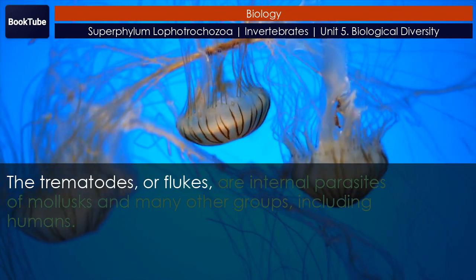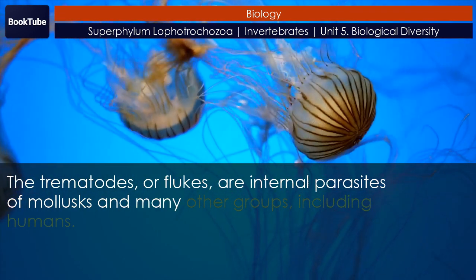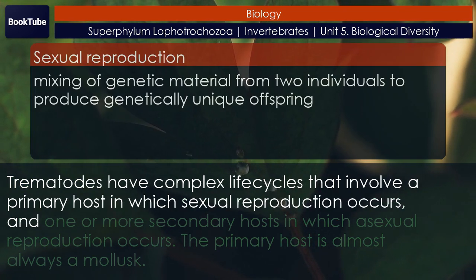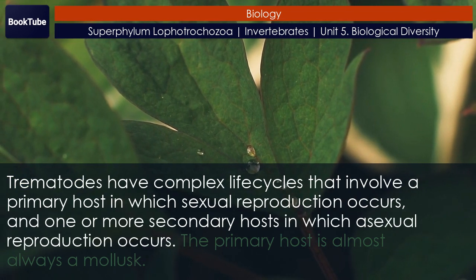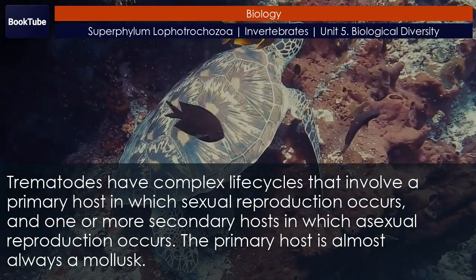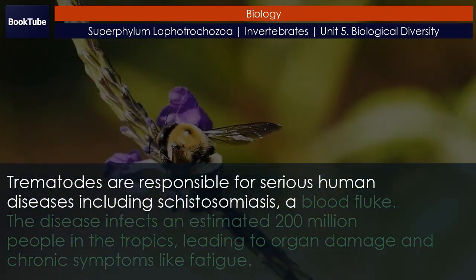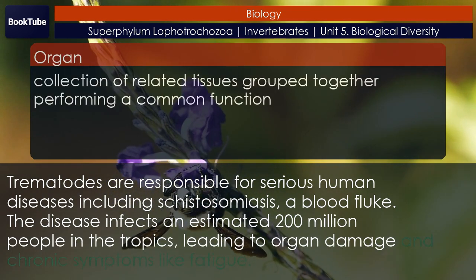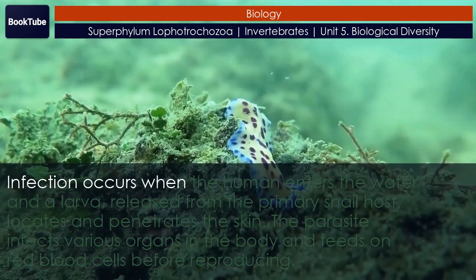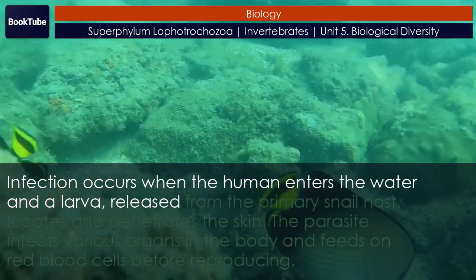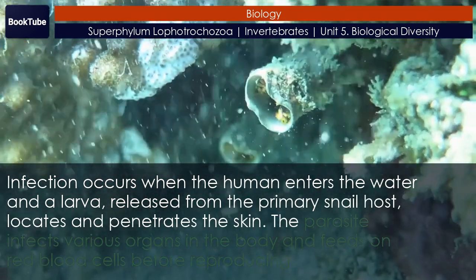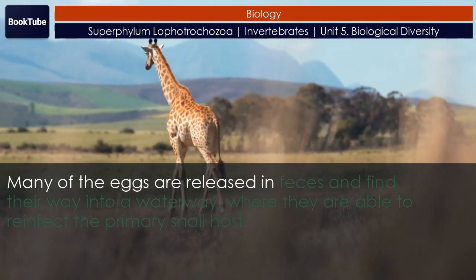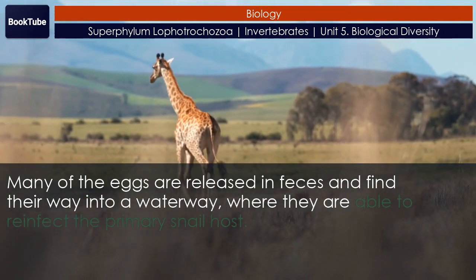The trematodes, or flukes, are internal parasites of mollusks and many other groups, including humans. Trematodes have complex life cycles involving a primary host in which sexual reproduction occurs, and one or more secondary hosts in which asexual reproduction occurs. The primary host is almost always a mollusk. Trematodes are responsible for serious human diseases including schistosomiasis, a blood fluke that infects an estimated 200 million people in the tropics, leading to organ damage and chronic symptoms like fatigue. Infection occurs when a human enters water and a larva, released from the primary snail host, locates and penetrates the skin. The parasite infects various organs and feeds on red blood cells before reproducing. Many eggs are released in feces and find their way into a waterway, where they can reinfect the primary snail host.